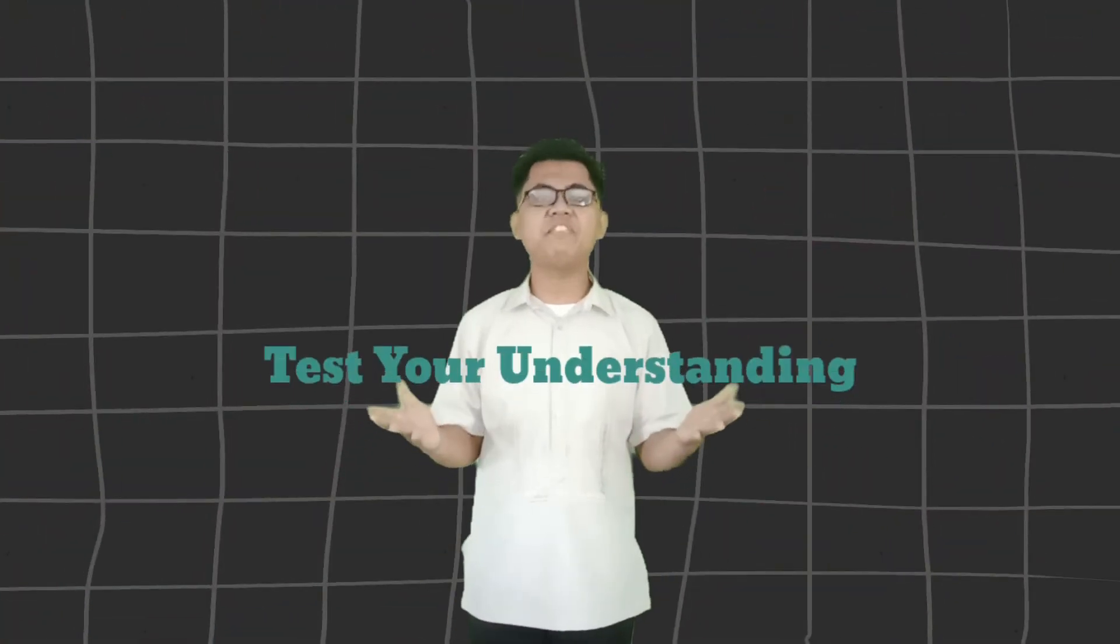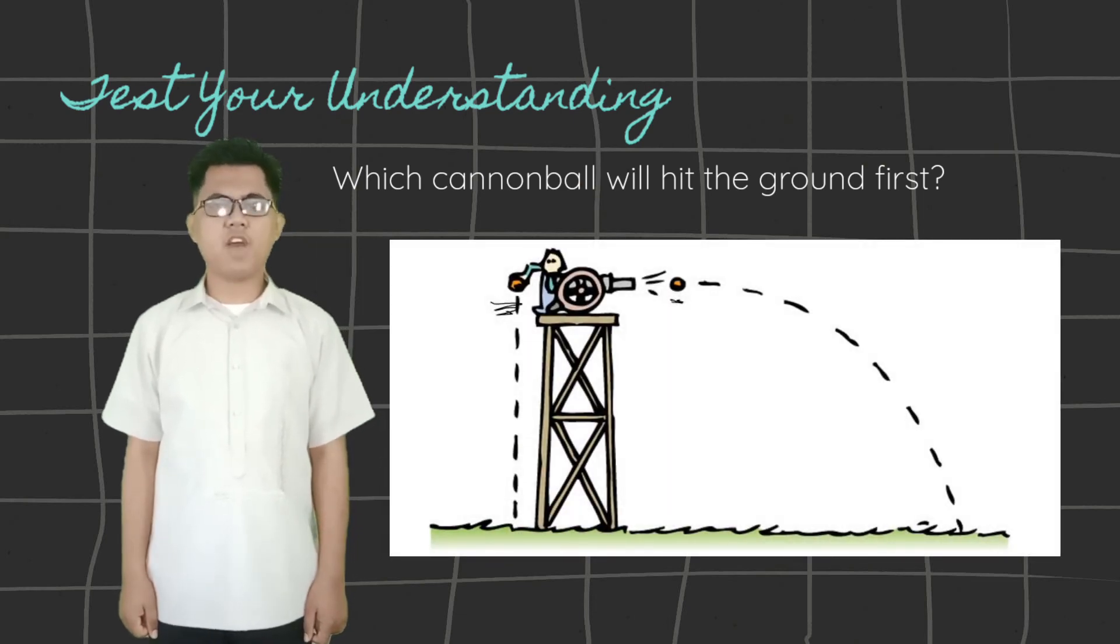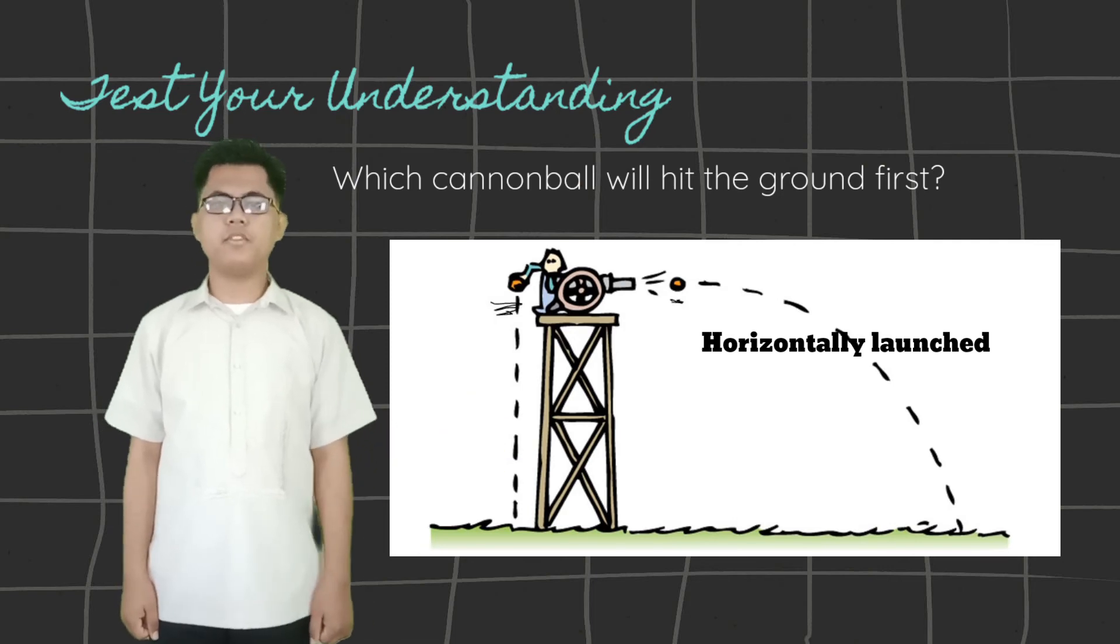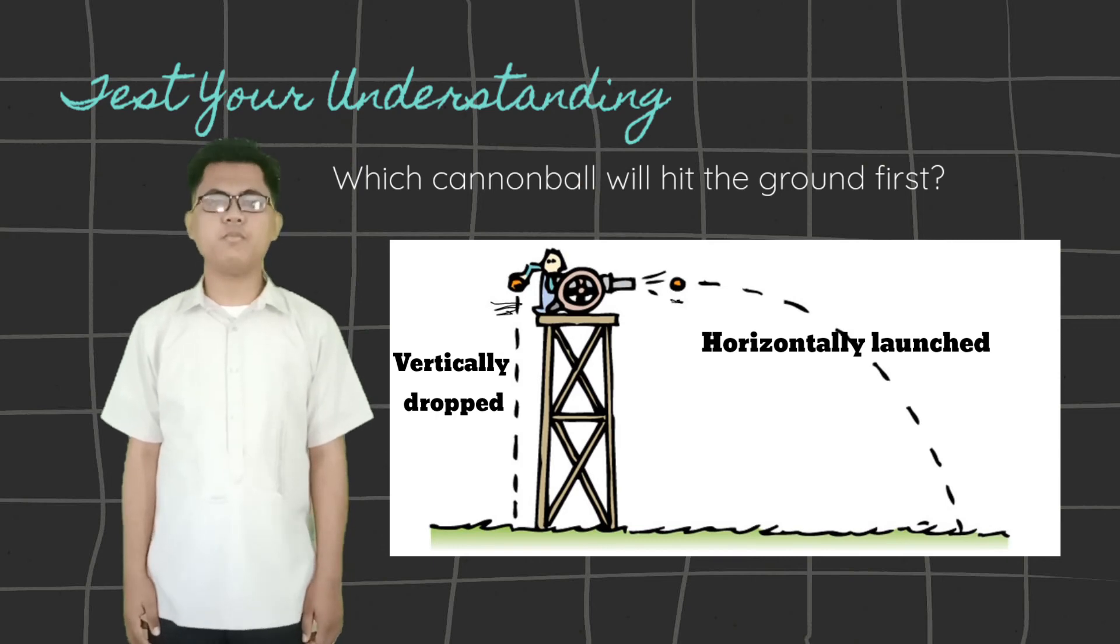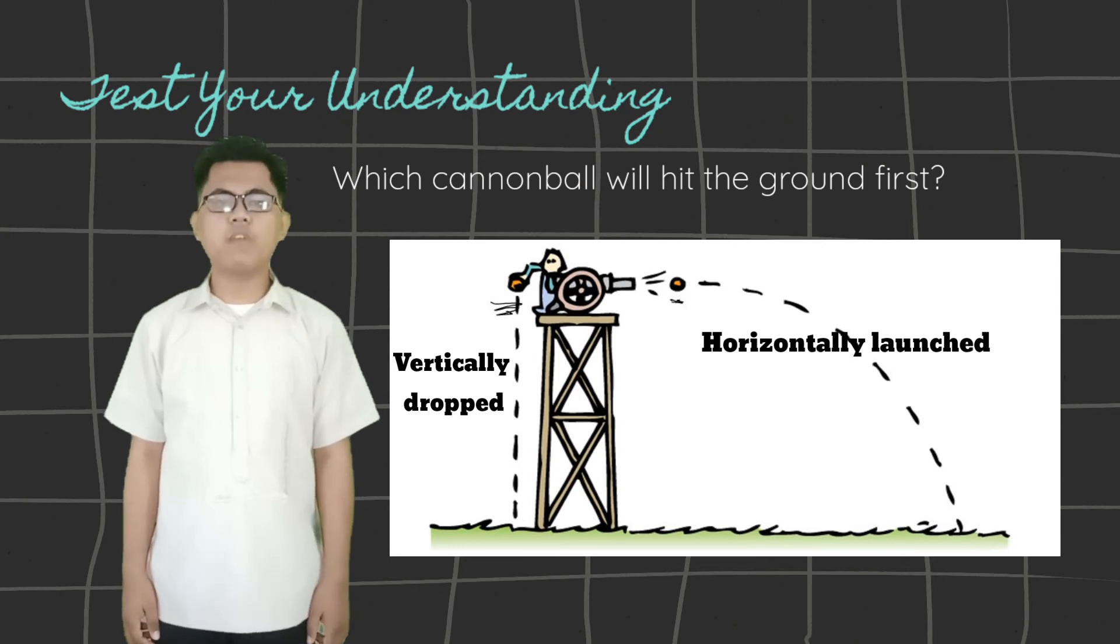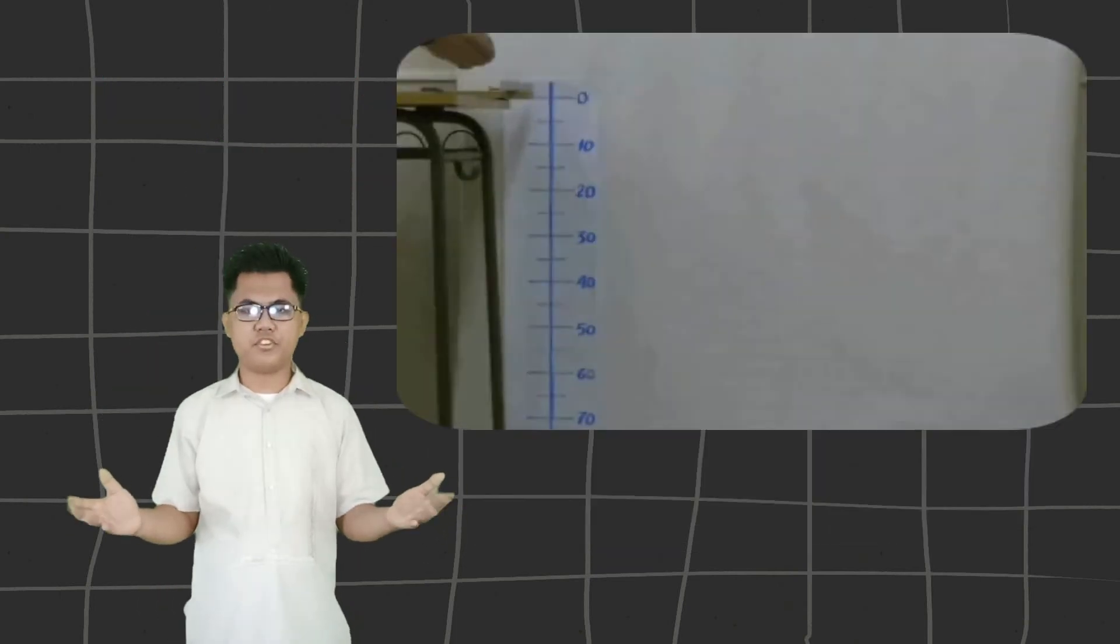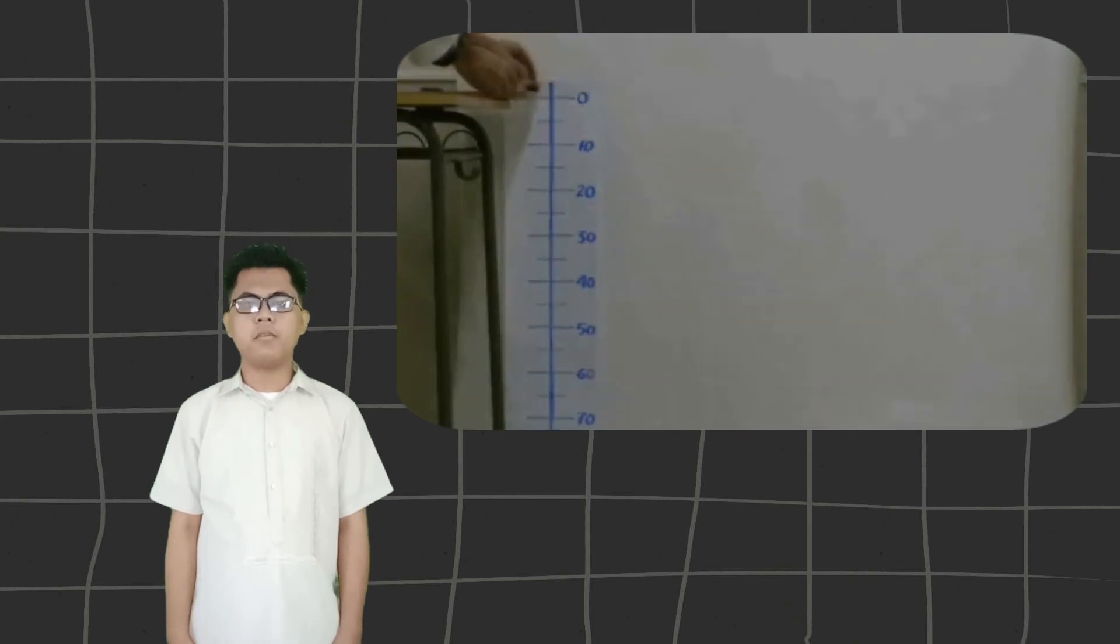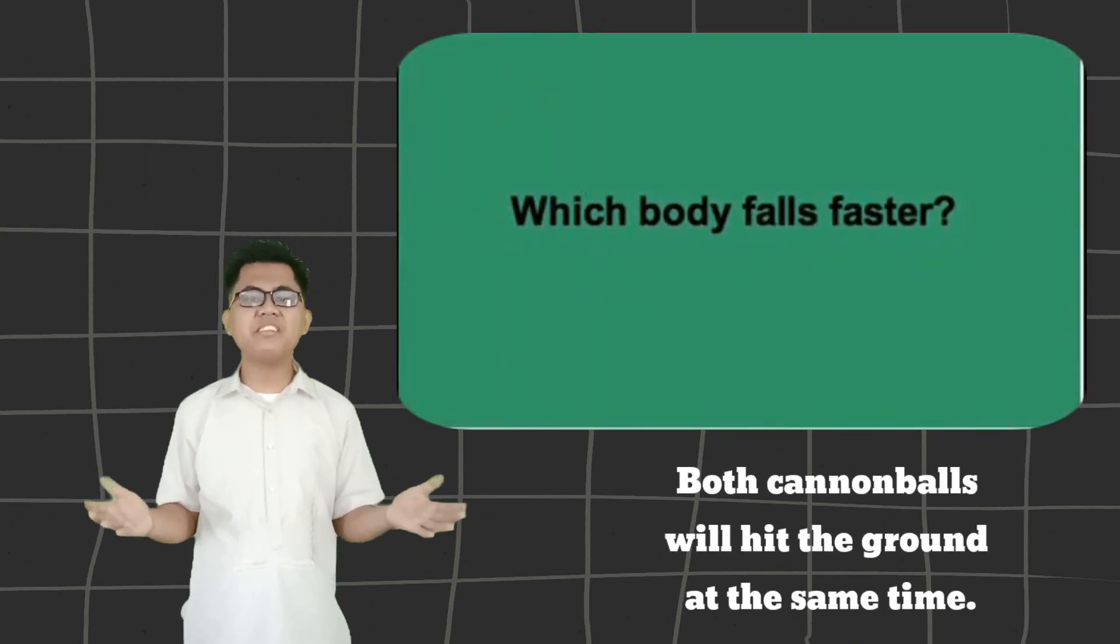Let me test your understanding. Suppose I have two cannonballs. One is to be fired horizontally and the other one is to be dropped vertically. After being released at the same time, which of these two cannonballs will reach the ground first? Have you made your guess? Okay, let me reveal now the answer. The correct answer is, these two cannonballs will actually land or hit the ground at the same time.